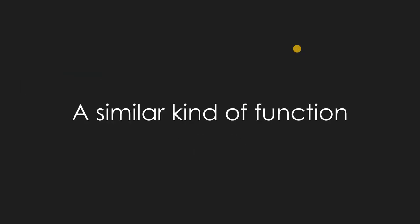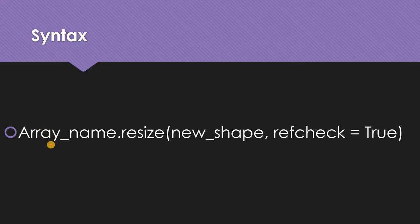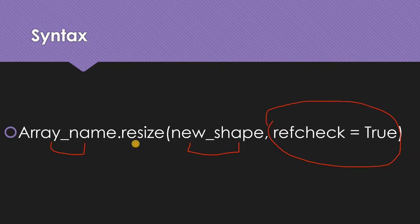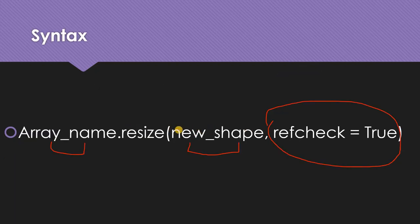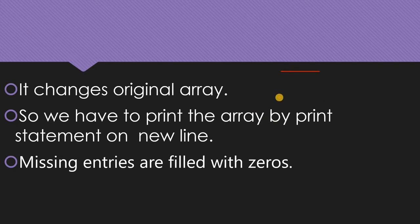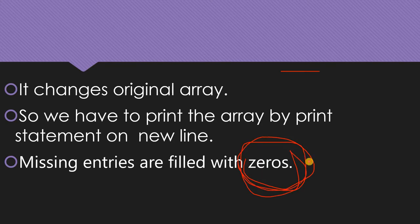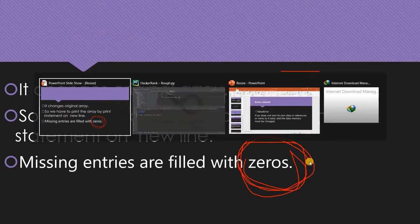There is one more function — a method form. The syntax is: array_name.resize with the new shape and ref_check equals to true. I'll discuss ref_check in a while. What does this do? This function changes the original array in place. You cannot print it directly on the same line — you need two separate statements. The most important difference is that missing elements are filled with zeros, not repeated copies.